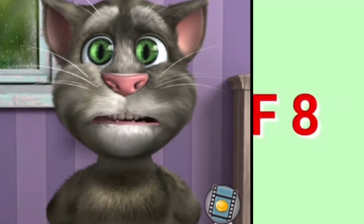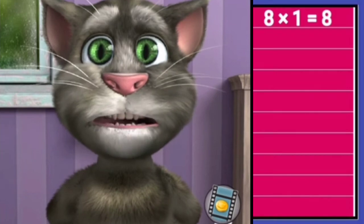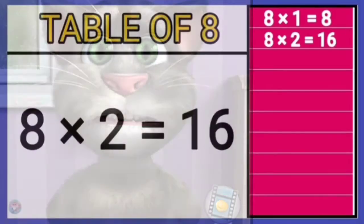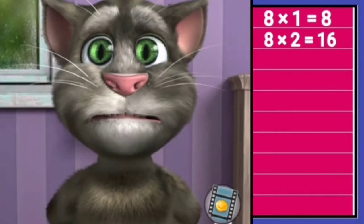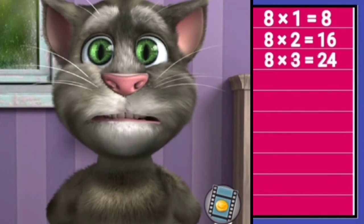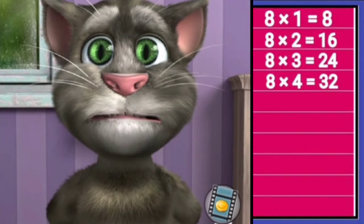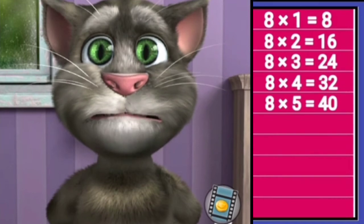Table of eight. Eight ones is eight, eight twos is sixteen, eight threes is twenty-four, eight fours is thirty-two, eight fives is forty.